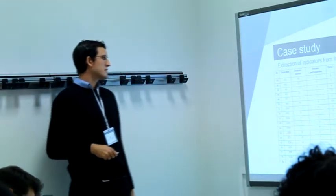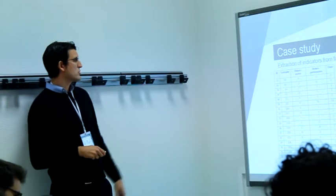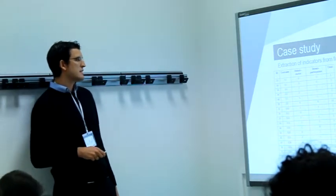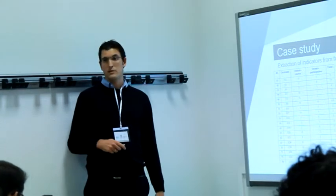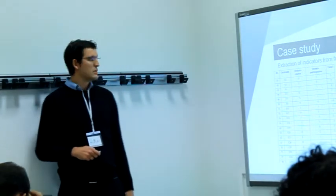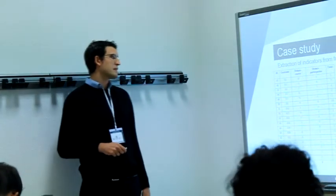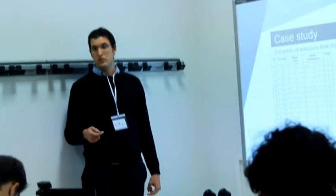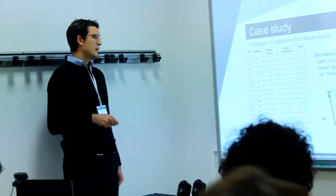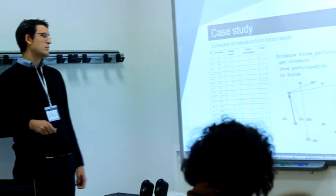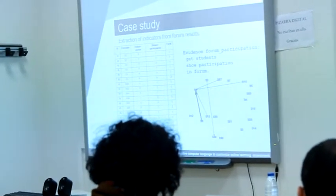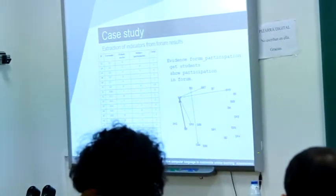And these are the results. The first two columns are user data. The third one, debates started, indicates how many debates were started by each student. Debate participation indicates how many responses were given by each student. And total is the sum of both. Here, we can see a graph of interaction.